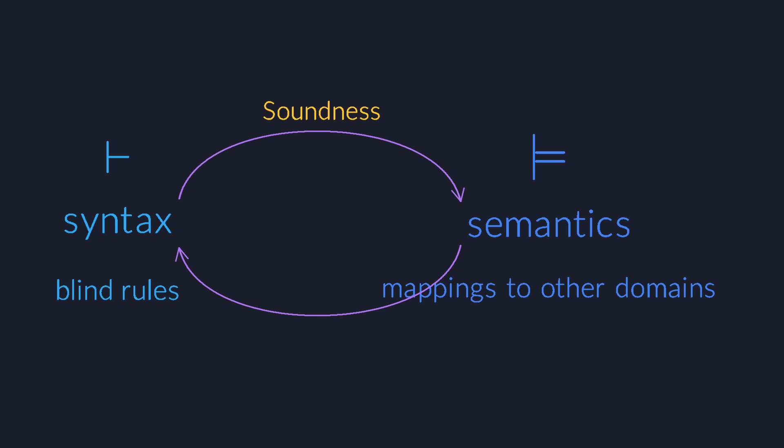So if you manage to prove something using the inference rules of your logic system, then you can rest assured that the thing you have proved is also semantically true. In other words, you can never prove something which then turns out to be semantically false. That's a relief.